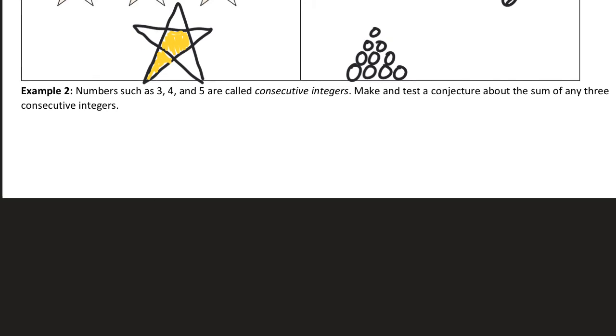So making a conjecture about this is tough because we're talking about any three. There's an infinite amount of possibilities here. So I'm going to just test a few. I'm going to test, first of all, three plus four plus five. And that's going to be seven plus five, which is 12.